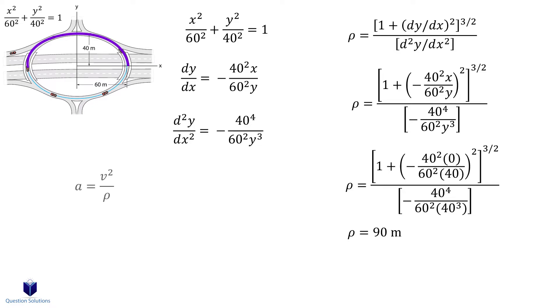The acceleration can be found using this equation. Remember that 60 kilometers per hour is 16.67 meters per second. Let's substitute those values in. And that's our answer.